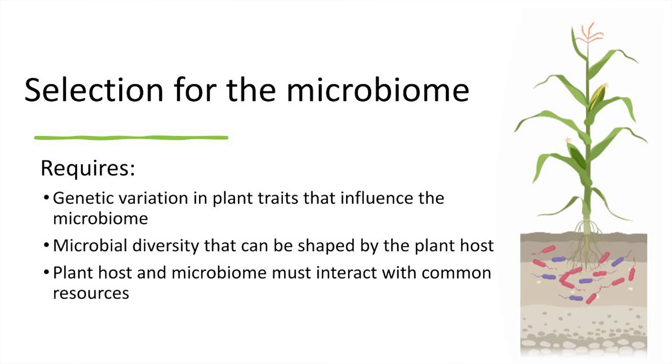As we think about the effect that plant genotype could have on the microbiome and how we might manage that, we consider three aspects. There must be genetic variation in the traits shaping the microbiome, sufficient microbial diversity to be shaped by the plant host, and the plant and microbiome must have some common dimension of interaction. Selective events such as crop breeding can decrease genetic variation and could lead to loss of the plant genotype effect on shaping the microbiome, meaning we would not be able to manage the microbiome through crop breeding.